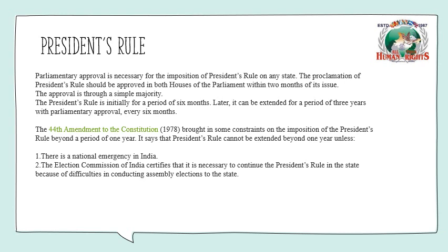President's Rule is initially imposed for a period of 6 months, and this emergency period can be extended for a maximum of 6 months at a time, with an overall maximum extension of 3 years. When the 44th Amendment to the Constitution came in 1978, restrictions were imposed on extending President's Rule beyond one year, to avoid misuse. The two conditions for extension beyond one year are: first, there must be a national emergency in India, and second, the Election Commission of India must certify that it is necessary to continue President's Rule due to difficulties in conducting assembly elections.